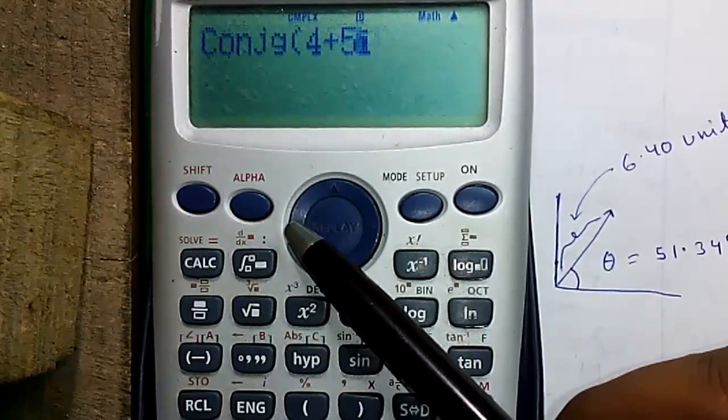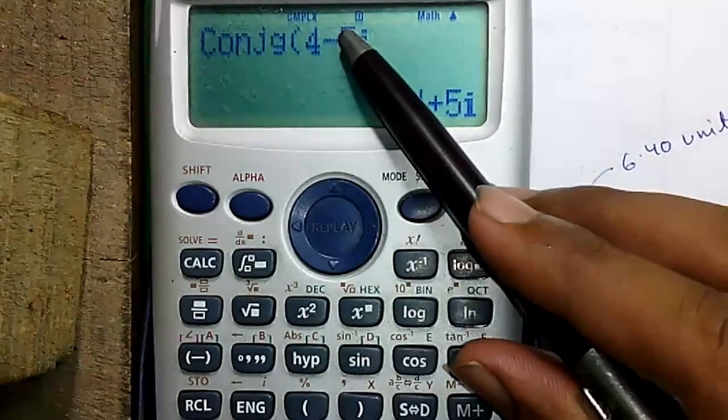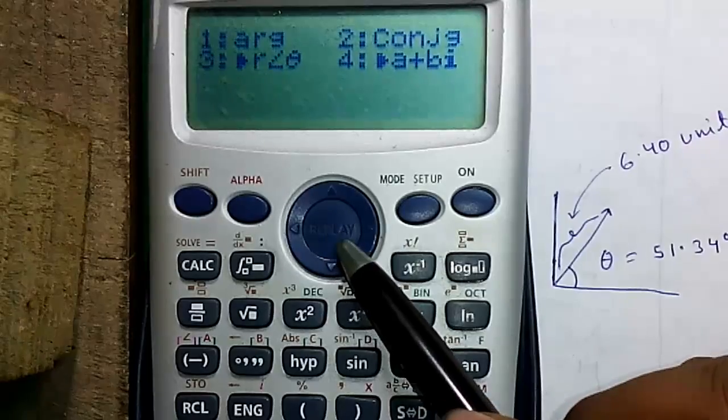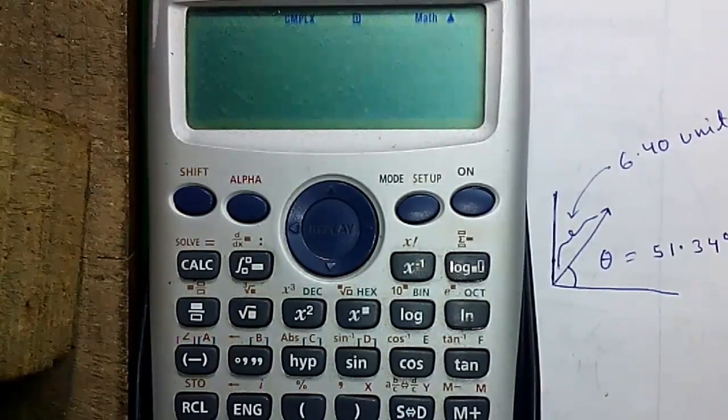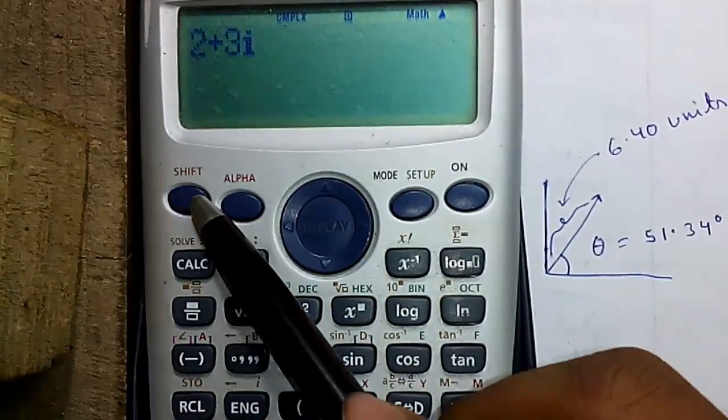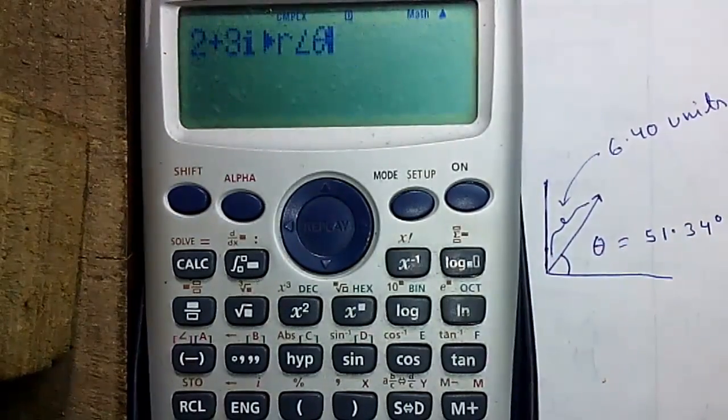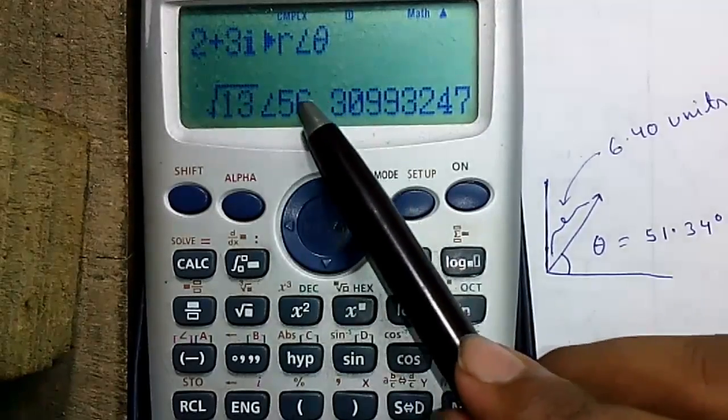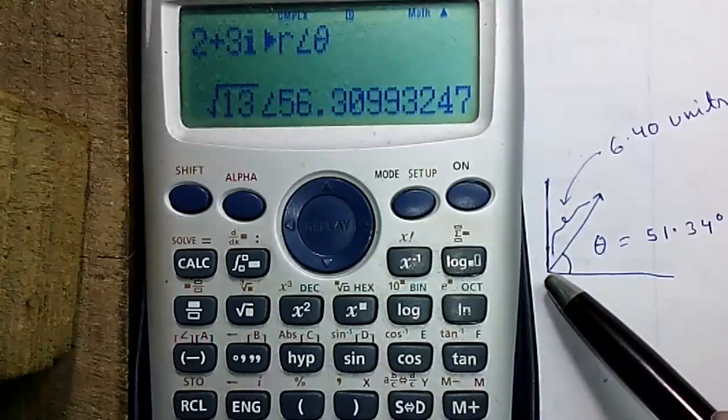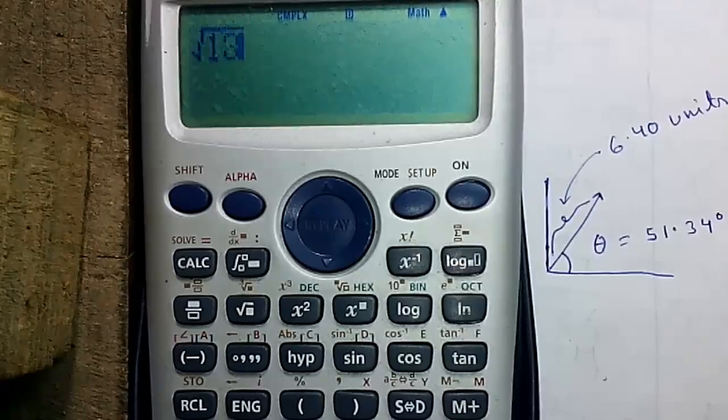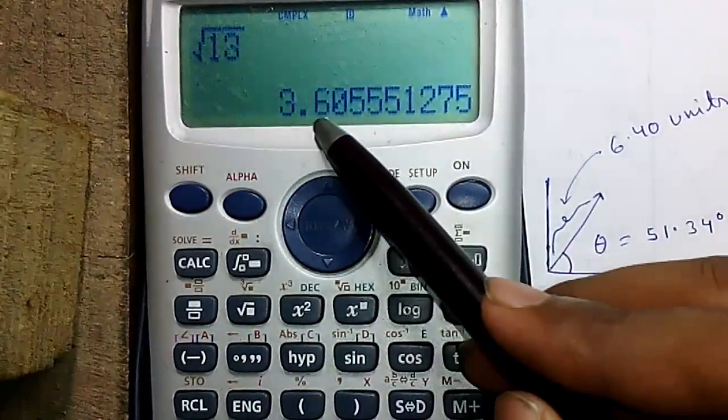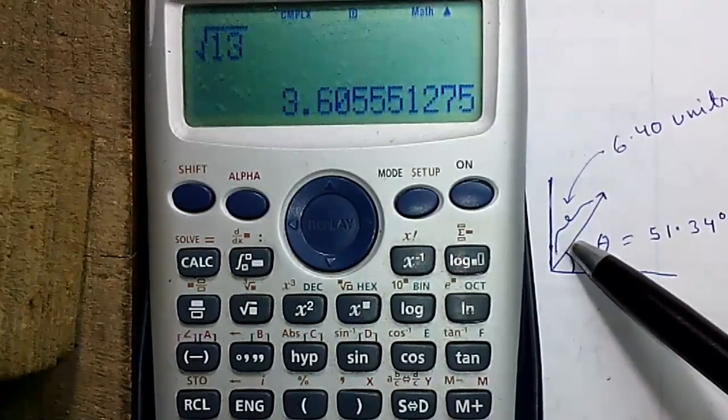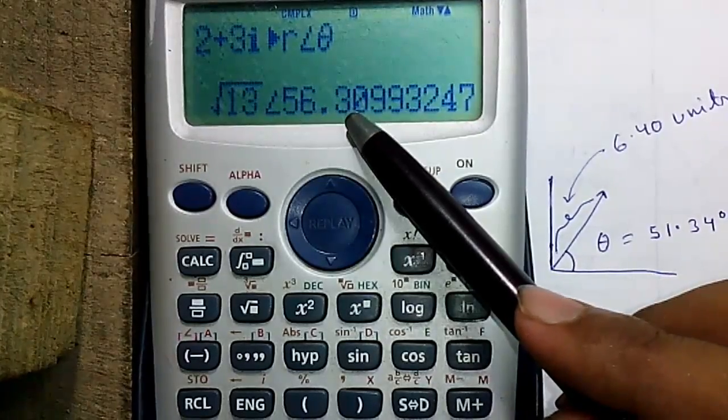The third option is rectangular to polar conversion. Let's enter a complex number in rectangular format: 2+3i. Press shift 2 and press 3, then press the equals button. So that is √13 and the angle is 56.30. This is the polar representation where this √13 represents the length of this component. √13 equals, press the SD button, is 3.60. That means this component is 3.60 units in length. The unit may be anything: inch, centimeter, or millimeter. And the angle is 56.30, that is represented in polar format.